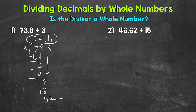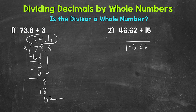For number 2, we'll see what happens when we do not get that clean cut 0 and we need to extend the problem until we do. We have 46 and 62 hundredths divided by 15. Let's set this problem up. Is the divisor a whole number? Yes, 15 is a whole number, so we bring the decimal straight up into the answer. Now we go through the division process.